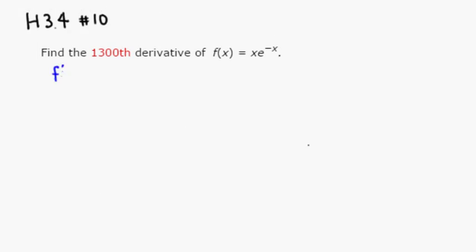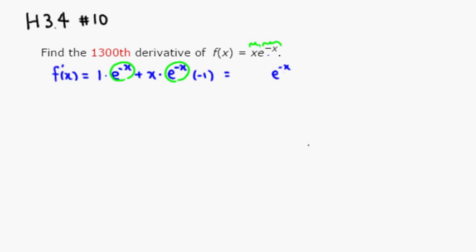Let's find the first derivative. We have two things multiplied together: x is the first function and e to the negative x is the second. Using the product rule, the derivative of the first times the second gives e to the negative x, plus the first times the derivative of the second. Using the chain rule, we multiply by the derivative of negative x, which is negative 1. Factoring out e to the negative x, we get e to the negative x times (1 minus x).